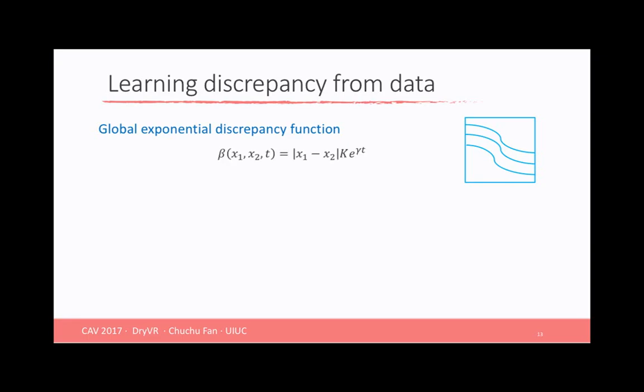So first let's give the discrepancy function some shape. For example, the global exponential function. That means for a pair of trajectories tau_1 and tau_2, at any time t, the distance between tau_1 and tau_2 is upper bounded by the initial difference, multiply constant k, then exponential function e^(gamma*t). With this template, now we see the goal is to compute the parameters gamma and k.